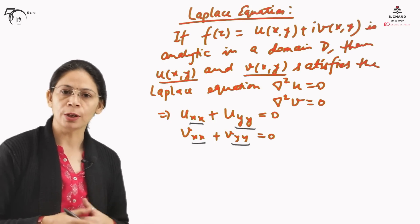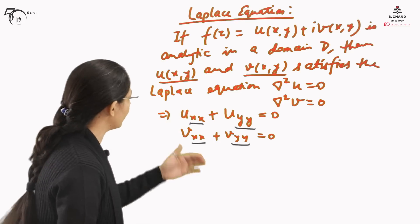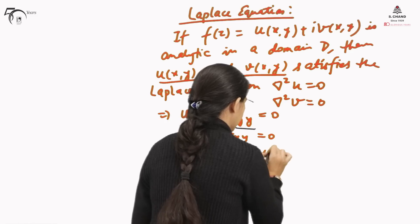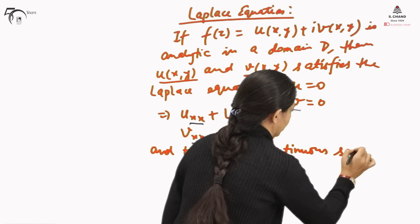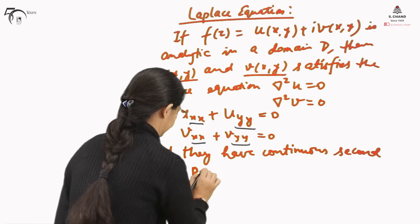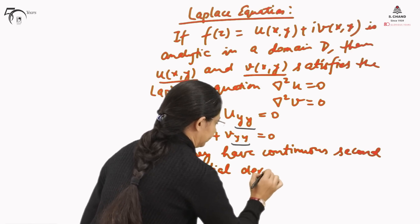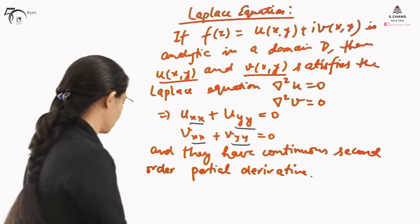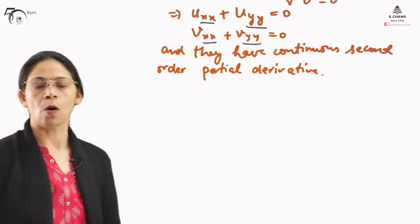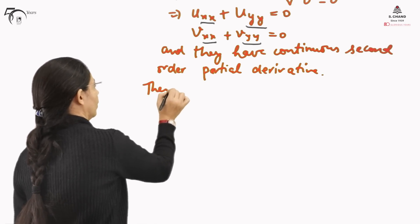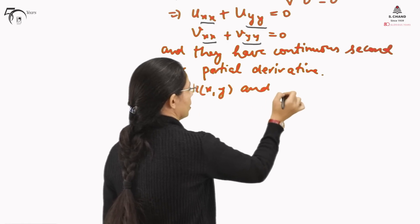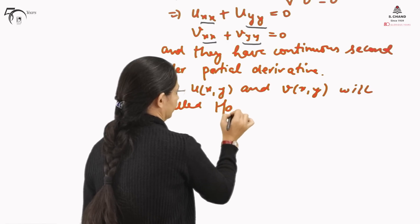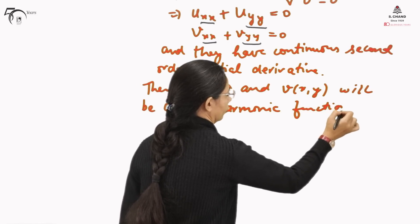U and V are the real and imaginary parts of the complex variable. If they satisfy the Laplace equation and have continuous second-order partial derivatives, then U(x,y) and V(x,y) will be called harmonic functions.